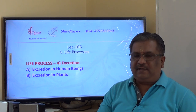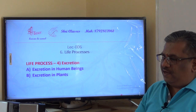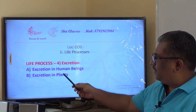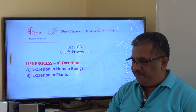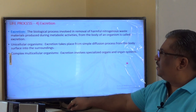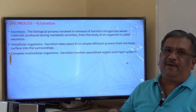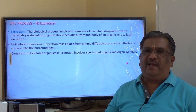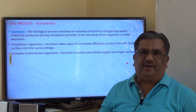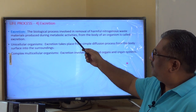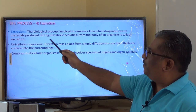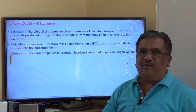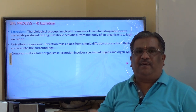Hello students, welcome to C classes. Let us continue with lecture number six, Life Processes, and this is the last life process — excretion. There are two parts: excretion in human beings and excretion in plants. Excretion is defined as the biological process involved in removal of harmful nitrogenous waste materials produced during metabolic activities from the body of an organism.